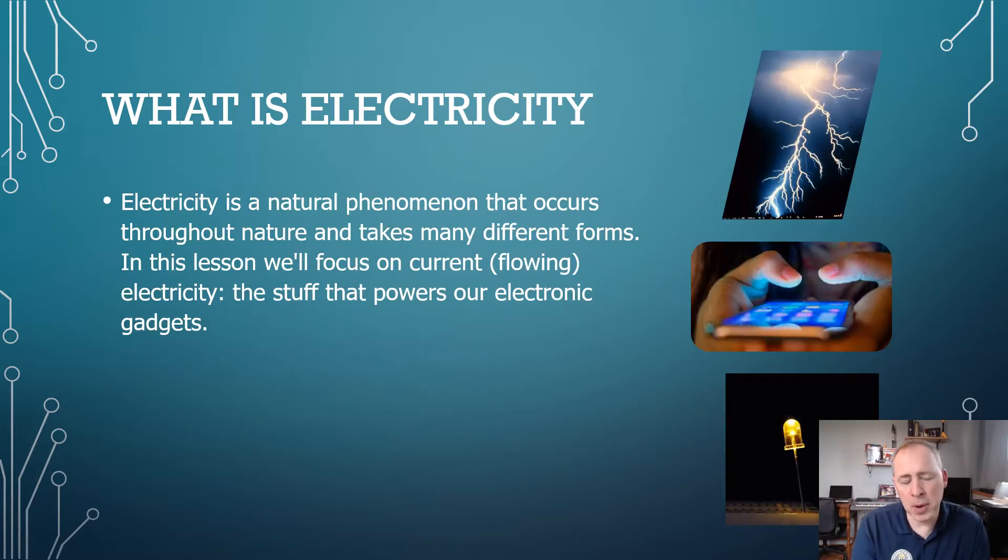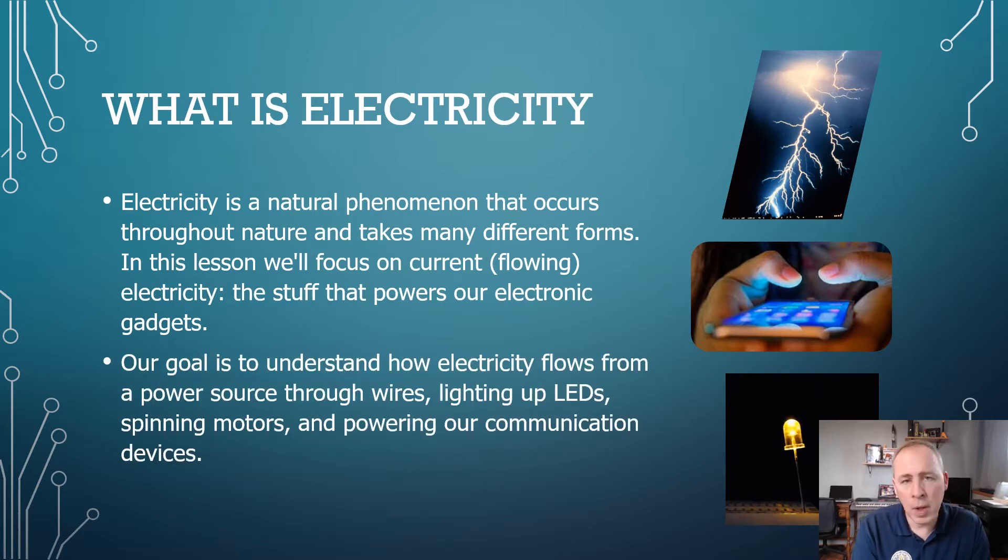So going a bit further, electricity is a natural phenomenon. It occurs throughout nature and takes many different forms. In this lesson specifically, we're going to focus on current, which is flowing electricity. The stuff that powers our electronics, the gadgets we use every day, and the things we talked about in the previous slide. Our goal is to understand how electricity flows from a power source, through wires, to light up LEDs, spinning motors, and powering our communication devices.